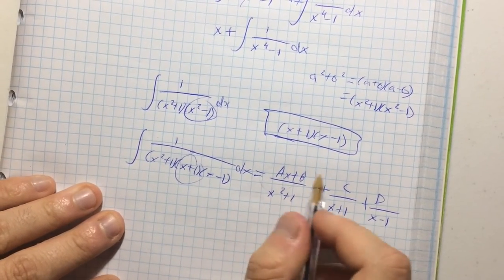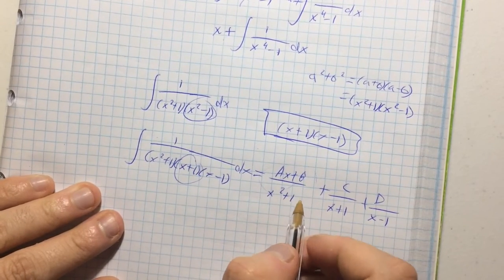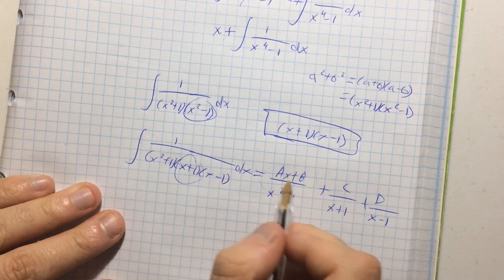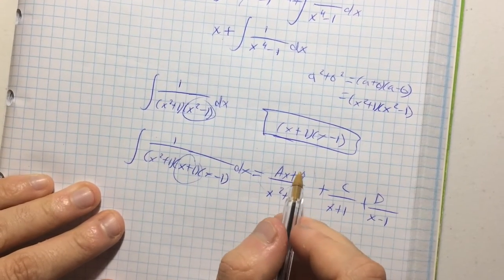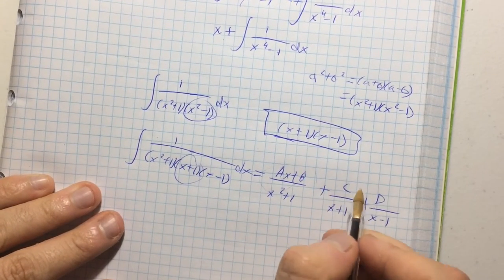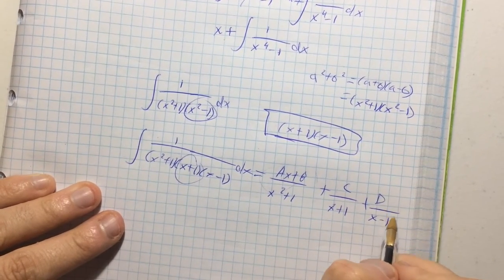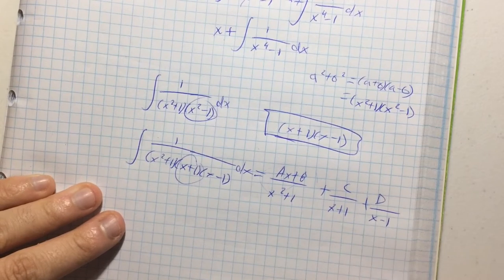So, how do I know that this is ax plus b? Because, if you have a denominator to the power of n, the numerator's degree of x is to the power of n minus one. So, this is technically c times x to the power of zero, and this is d times x to the power of zero, because this is x to the power of one, yeah.